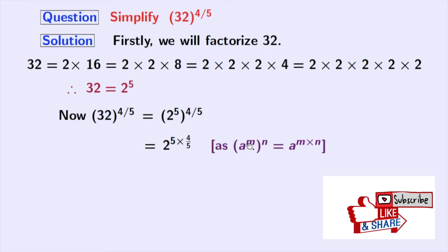As we know that, a power m whole power n is equal to a power m times n. Here a is 2, m is 5 and n is 4 by 5.